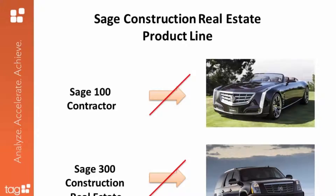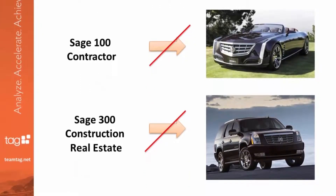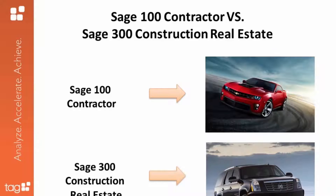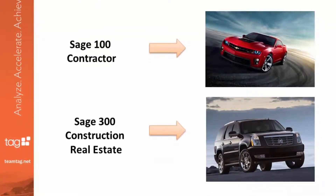Many people have the perception that SAGE 100 Contractor and SAGE 300 Construction Real Estate are simply various versions of the same platform — something like the comparison between a small Cadillac sedan and a large Cadillac SUV. This perception is incorrect. You can think of the relationship between programs like the comparison between a Chevy Camaro sports car and a large Cadillac SUV — two different makes, but cars that offer much of the same functionality.